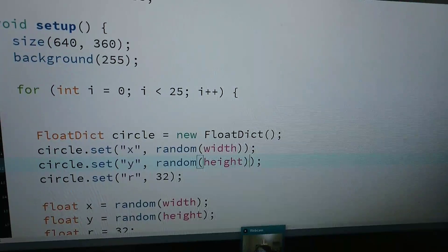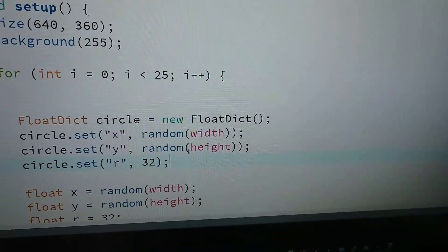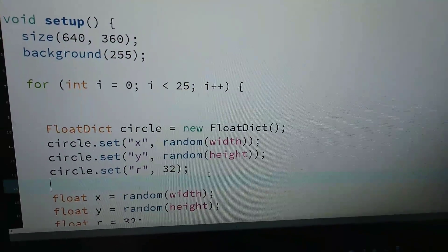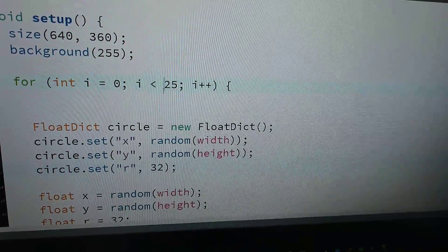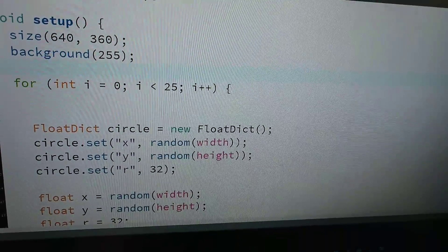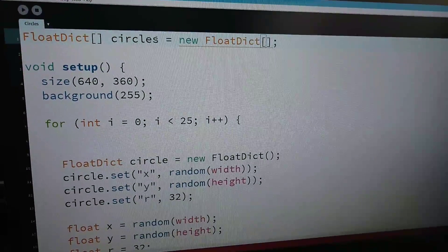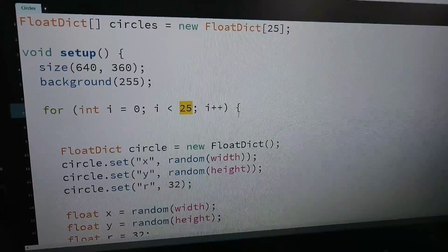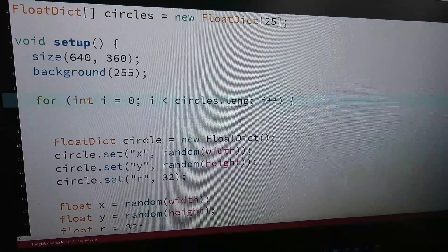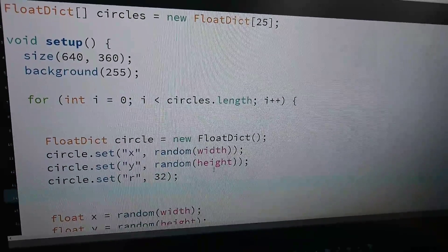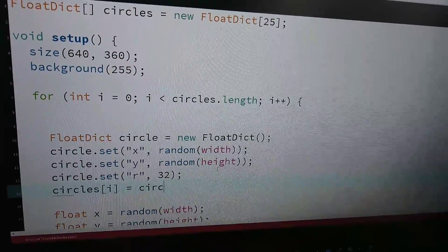See I just made my own circle but just one dictionary? No, those are multiple circles because I'm inside of a loop right now. And now I need to initialize this as a new float dictionary array with 25 elements in it. So 25 circles. I'm going to say circles dot length, that's the length of the array. And now I can say circles index i equals circle.